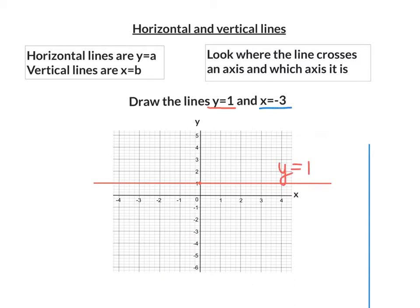Second line is x equals negative 3. So it crosses the x axis at negative 3. As it crosses the x axis, it must be a vertical line. And it's this blue line here. And it's the line x equals negative 3.